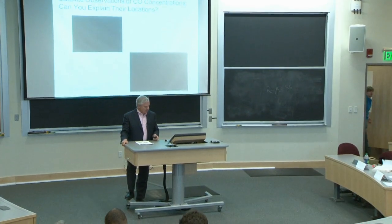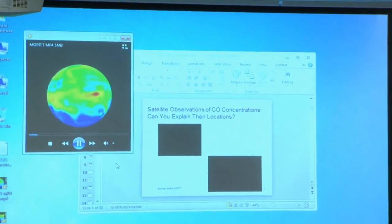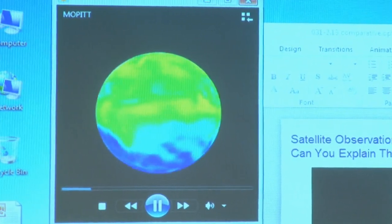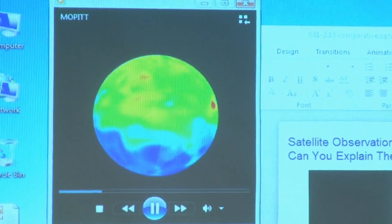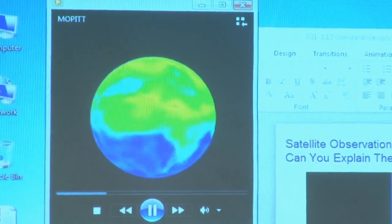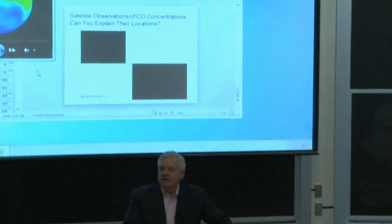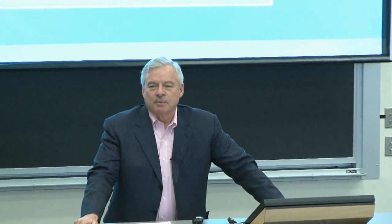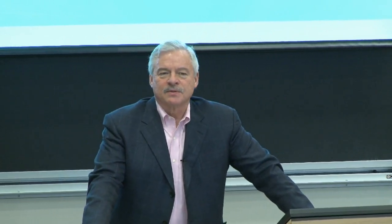I want to start with a small puzzle. This is satellite capture of carbon monoxide plumes globally. I'll let this run for a while, and I'll show you another one that's got more information but harder to read. So the question is, why are they where they are? Which requires you to first figure out where carbon monoxide comes from. Quick response: how do you get carbon monoxide in the atmosphere in quantity?